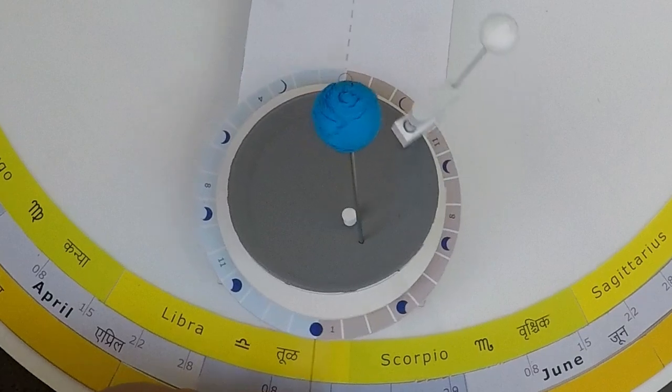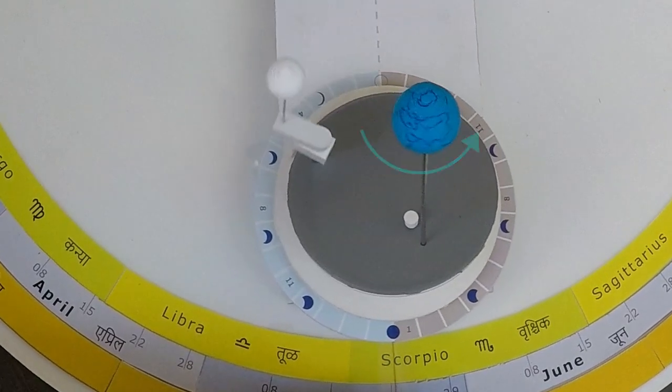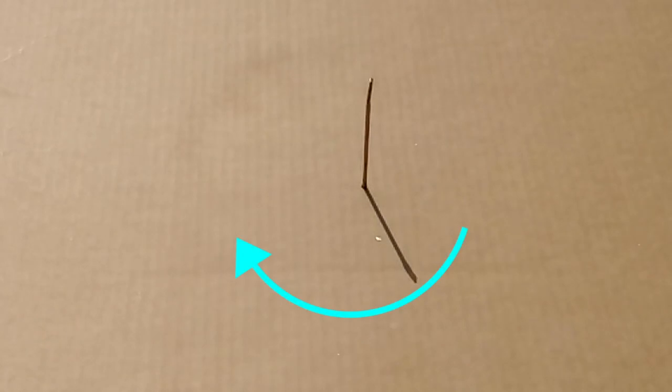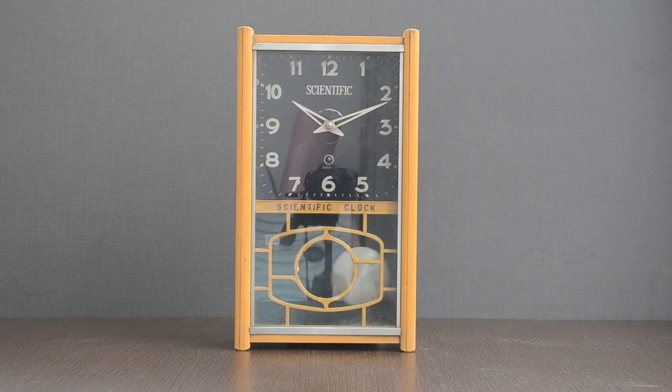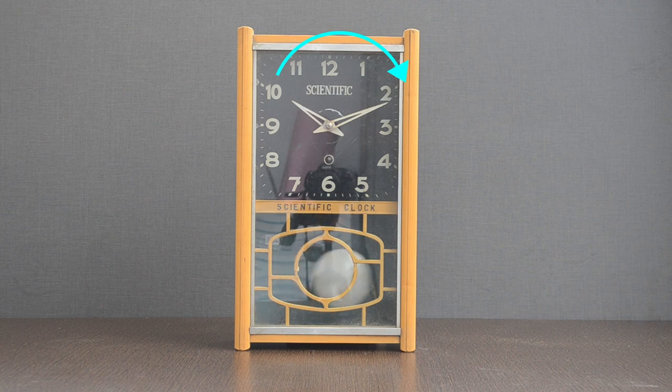Earth rotates in a counter-clockwise direction. This could be the reason the shadow moves in a clockwise direction. As modern clocks are based on the original sun dials, we might be calling this direction clockwise and this one anticlockwise.